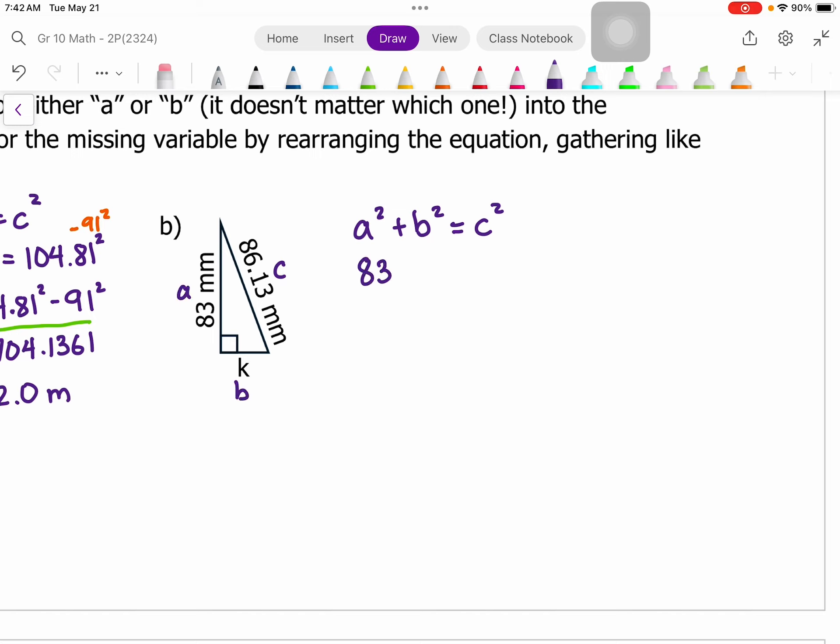So 83 squared plus k squared is equal to 86.13 squared. Now I want to isolate for k squared, which means I want to move over the 83 squared, so I'm going to subtract that from both sides.